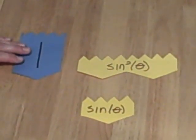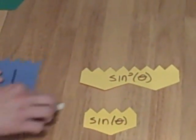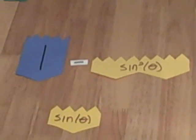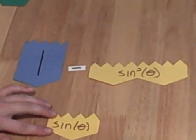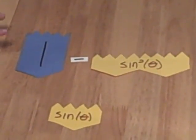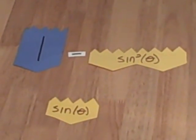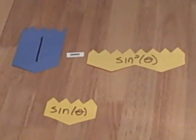Now, we have 1 minus sine squared all over sine. The nice thing about this is that now this only deals in sines. There's no more cosines in here.